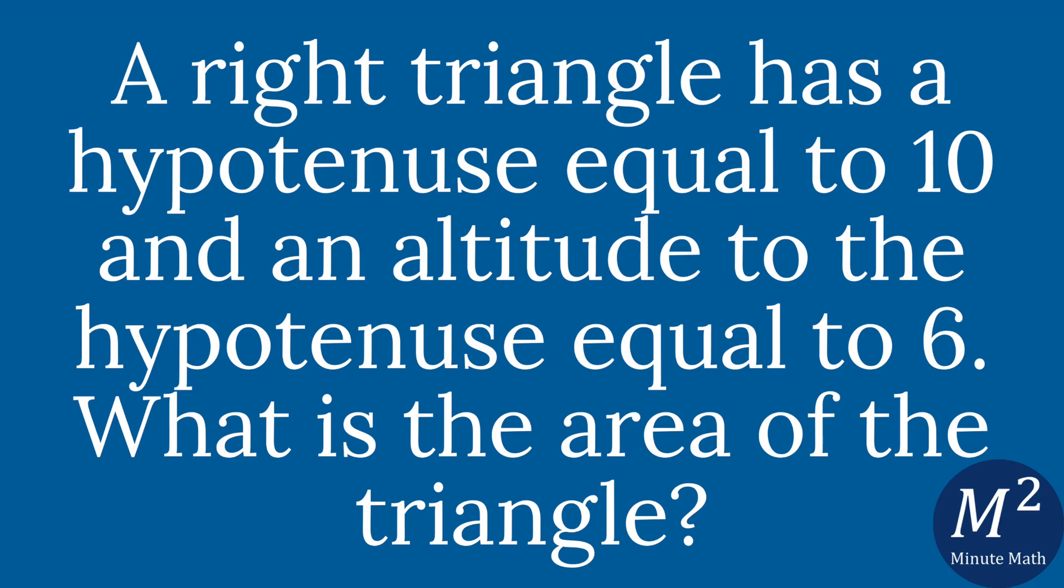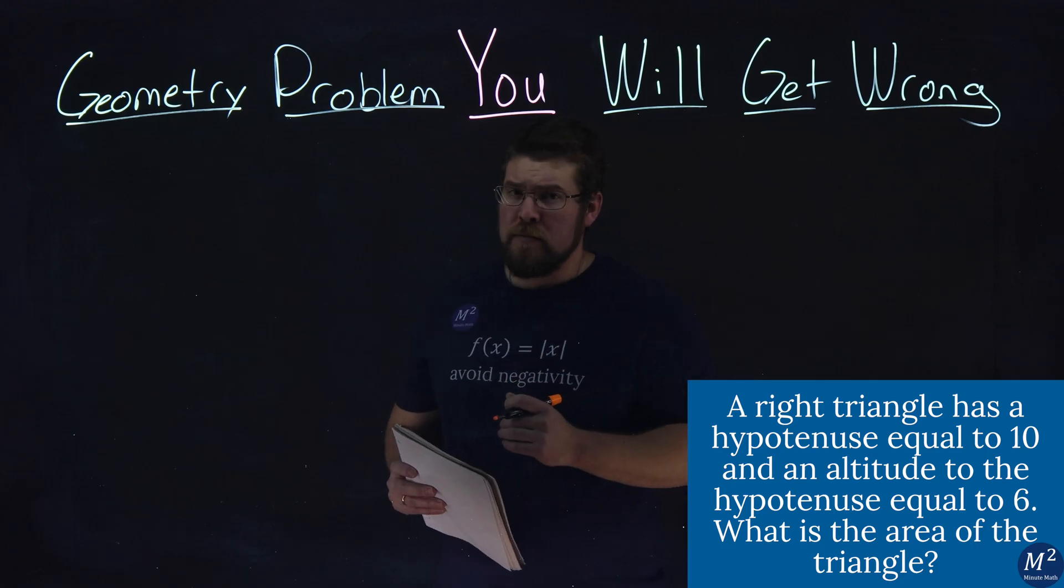A right triangle has a hypotenuse equal to 10 and an altitude to the hypotenuse equal to 6. What is the area of the triangle? I want you to pause this video right here and see if you can get this answer. Let's go solve this problem.